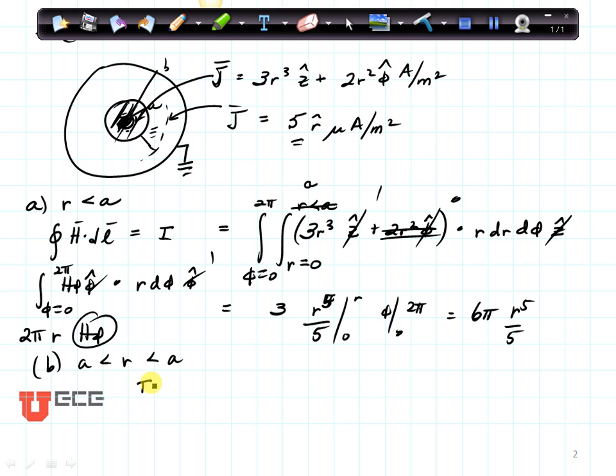So the total current enclosed is going to be 3, r to the fifth over 5, from 0 to a, times phi from 0 to 2π.